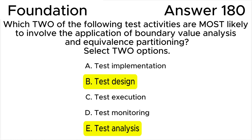All the rest of the answers are wrong. Answer A is not correct. Test implementation is not likely to involve the use of test techniques, as it is most concerned with assembling test cases into test procedures, while test techniques create test cases. Answer C is not correct. Test execution is not likely to involve the use of test techniques, as it is mostly concerned with executing test procedures and test cases, while test techniques create test cases.